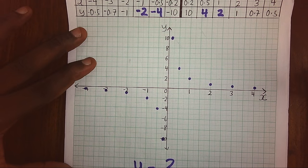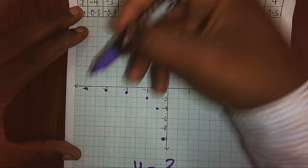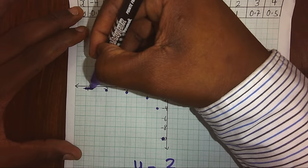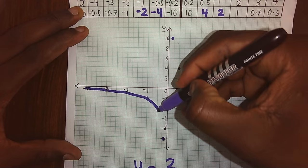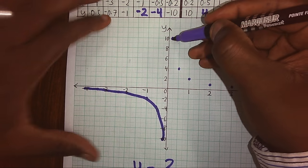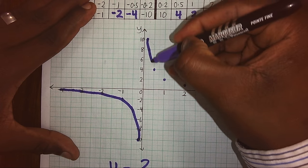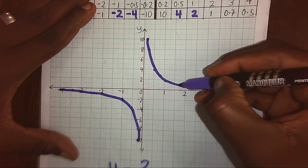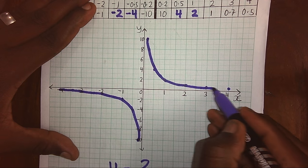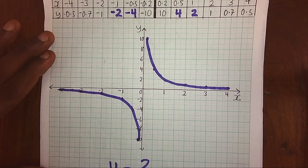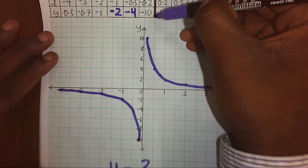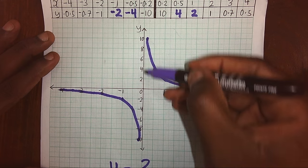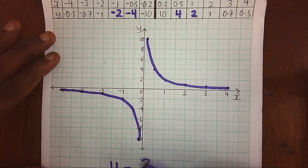When we join this graph, it will appear in such a way that it is going like that on one side and like that on the other side. There we go. Because we have no values at x equals 0, that's why this graph is not allowed to touch the y-axis.